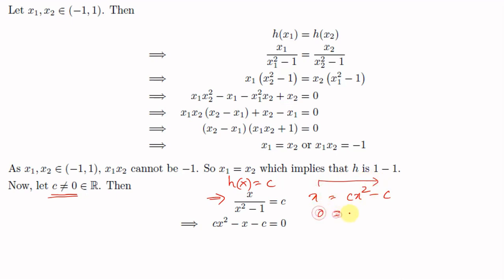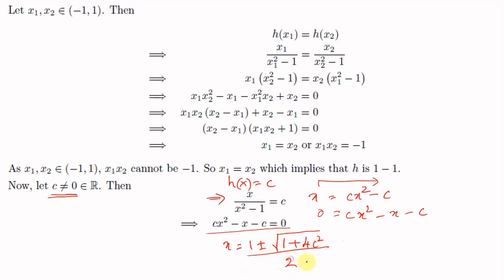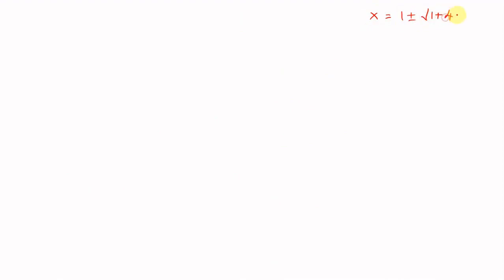Using the quadratic formula on cx² - x - c = 0, we get x = (1 ± √(1 + 4c²)) / (2c). We now split into cases c < 0 and c > 0.